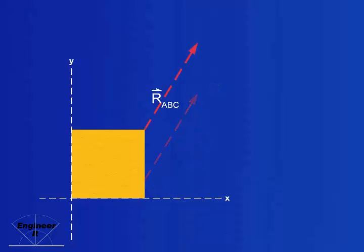But where is the line of action located? Where do I apply the resultant force?